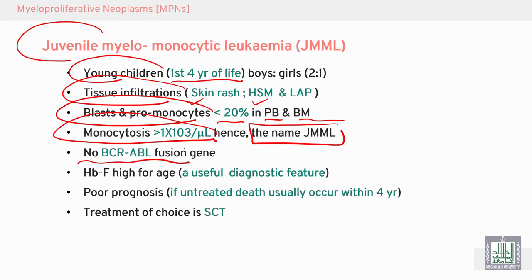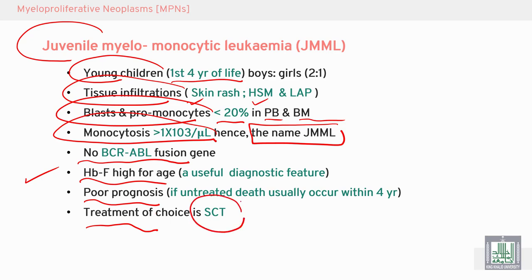Comparing with CML, a useful diagnostic feature is high hemoglobin F. The prognosis is poor, and the treatment of choice is stem cell transplantation.